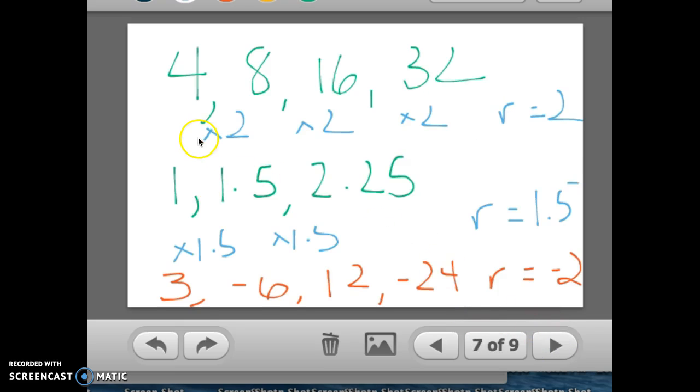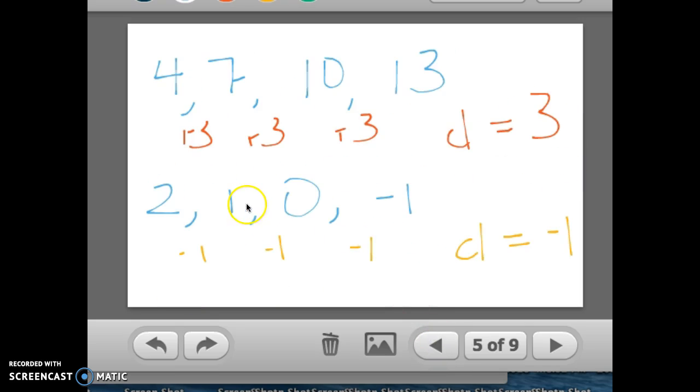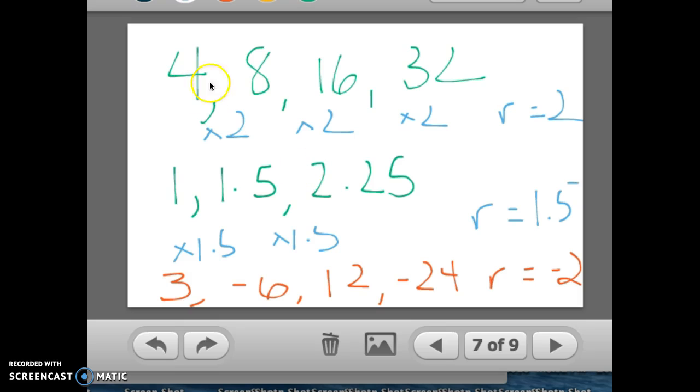And so, those were, if I go back, those are some examples of more examples of arithmetic sequences with common differences. But if I move ahead, these don't have common differences. This has plus 4, plus 8, plus 16. This has plus 0.5, plus 0.75. But what they do have is a common amount we're multiplying by,